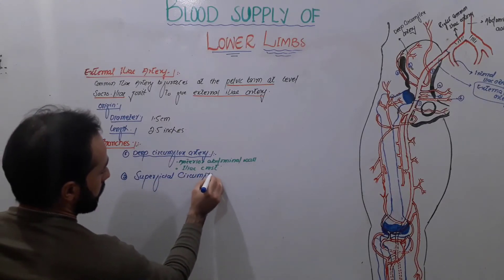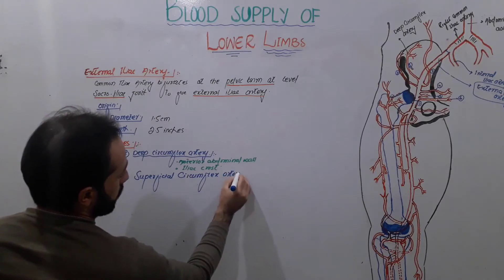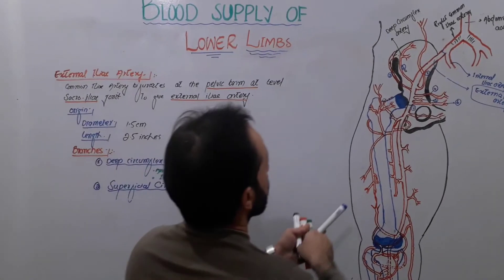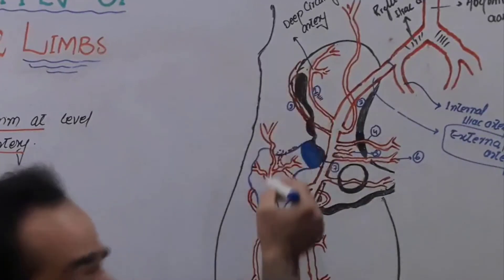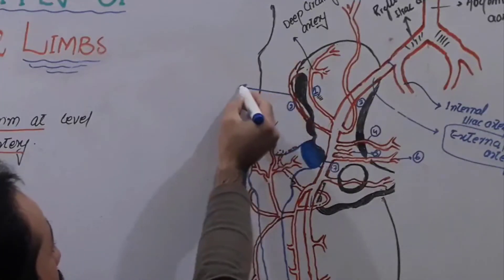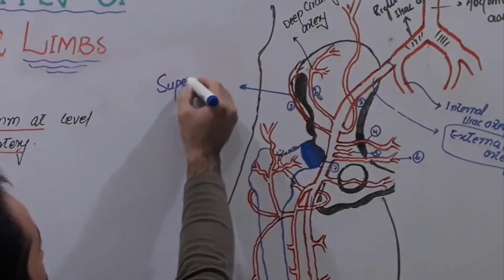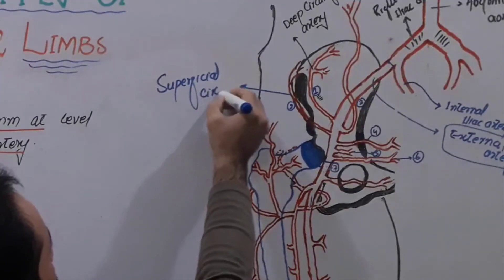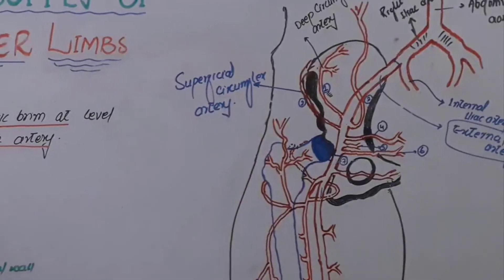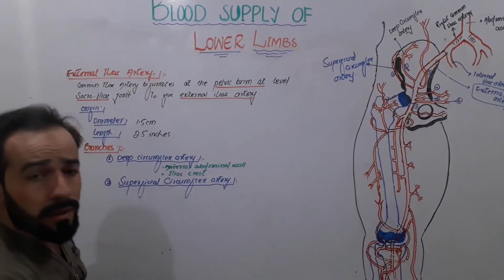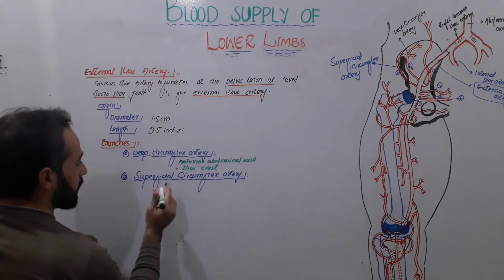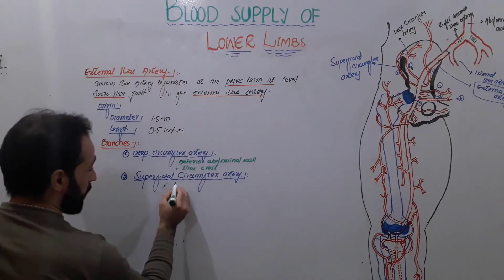The second branch of the external iliac artery is the superficial circumflex artery. You can see this second branch in the diagram — this is the superficial circumflex artery. This artery is responsible for supplying blood to the inguinal lymph nodes.